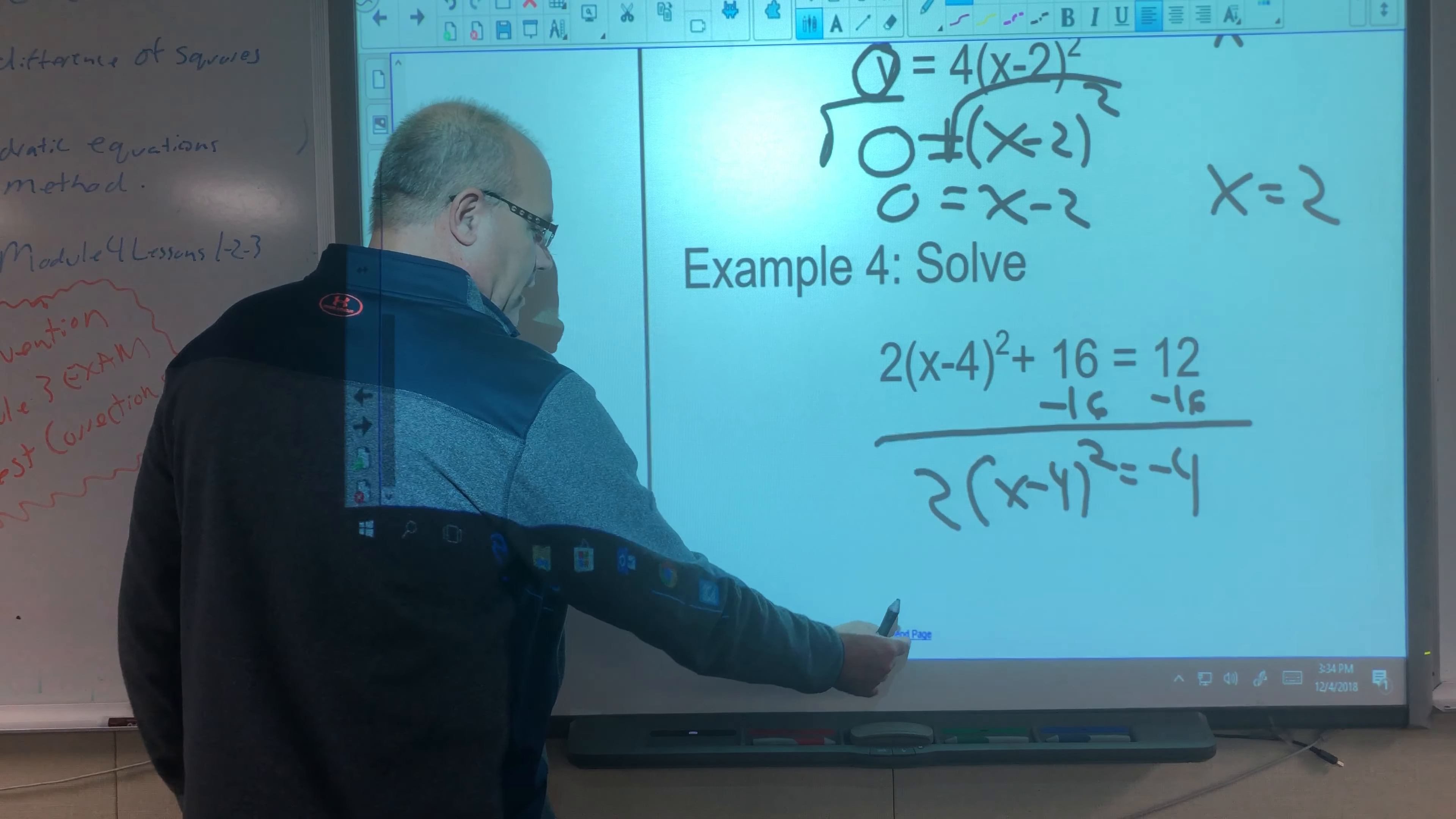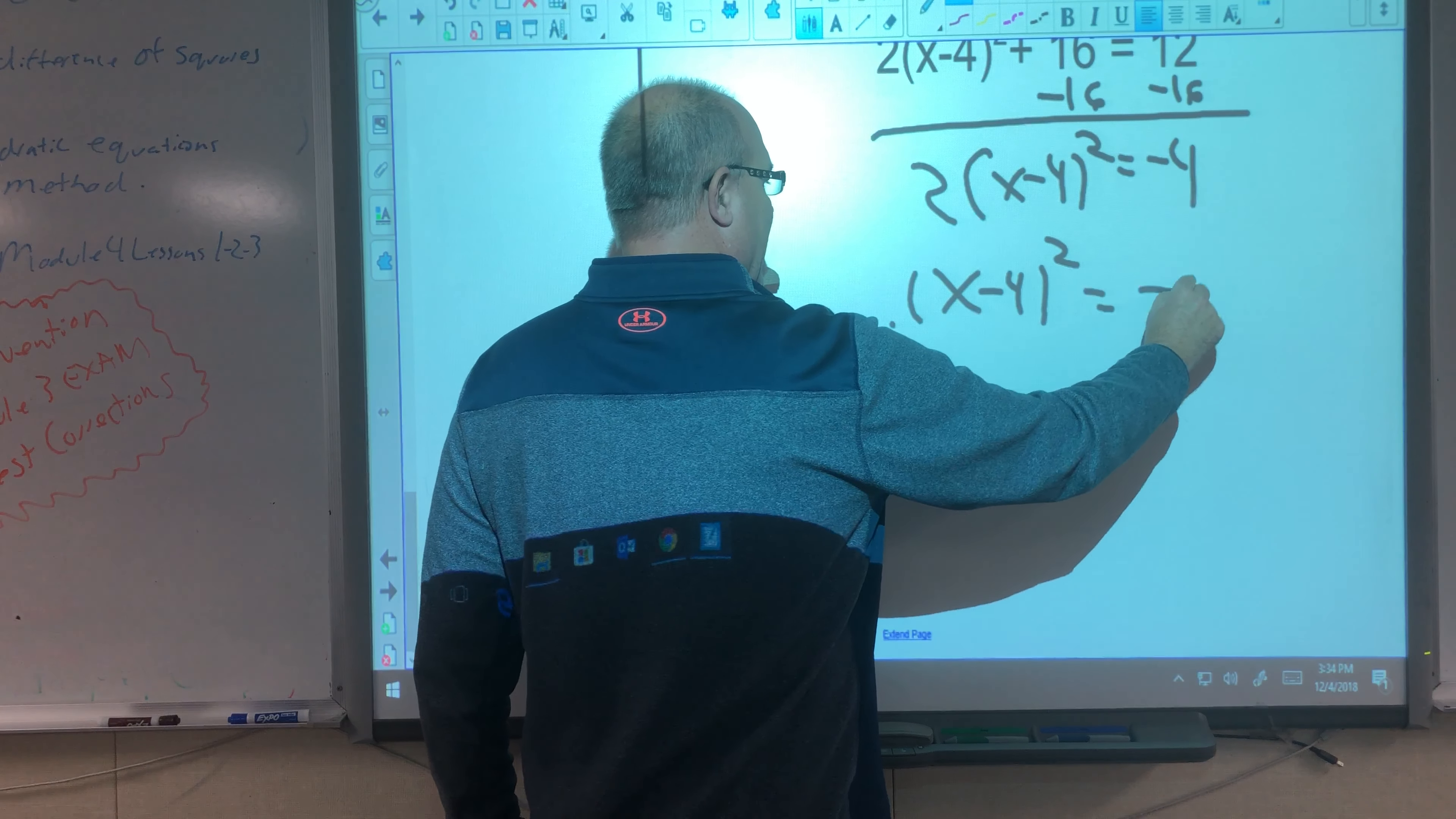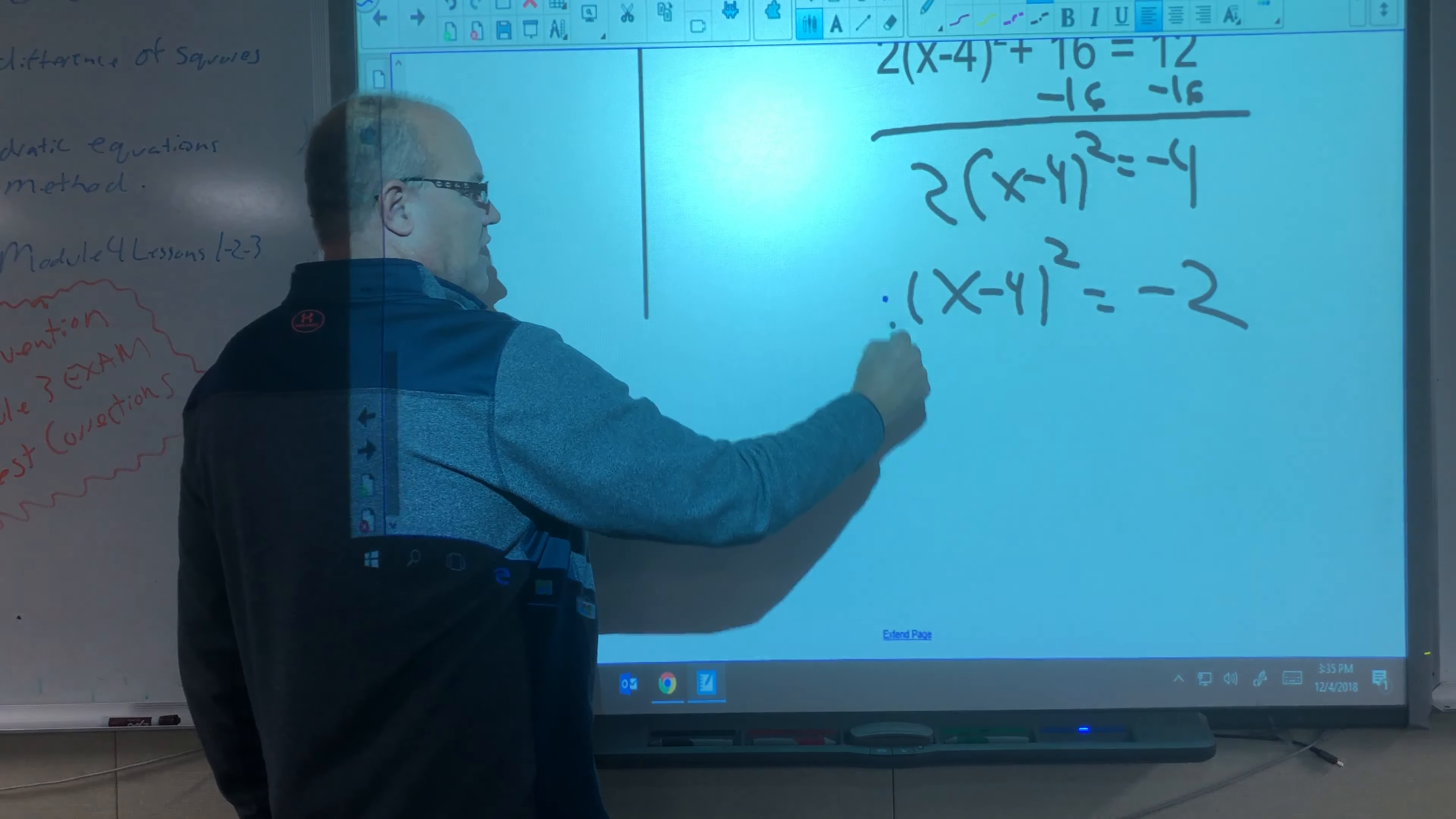Now we're going to divide by 2, both sides. So I get x minus 4 squared equals negative 2. You see what's going to happen here? Sure you do. We're going to take the square root of both sides.